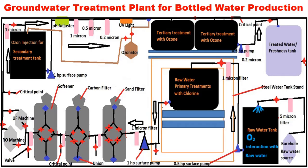After the RO stage, this is a critical point where you test TDS to confirm the water is completely demineralized or deionized. If confirmed, allow the water to flow through a 1-micron filter to remove any debris. The valve is then opened and water enters the secondary treatment tank, where we suggest ozone.